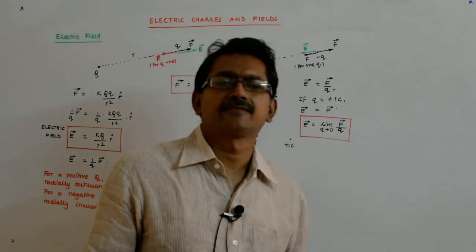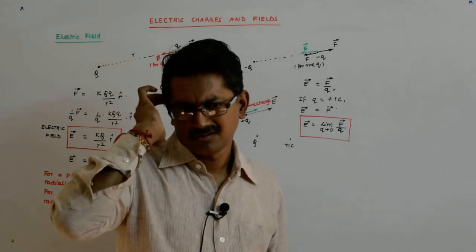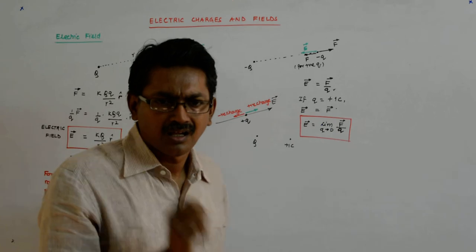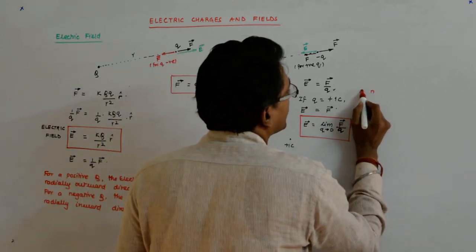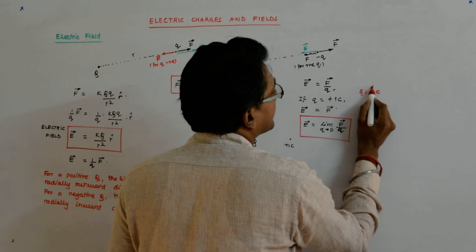The charge on the electron is negative, opposite to that of proton. I had told you that in Q is equal to N times e, this N is an integer.